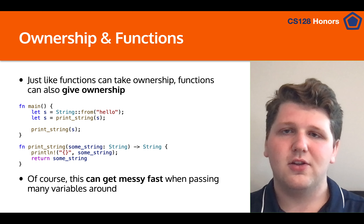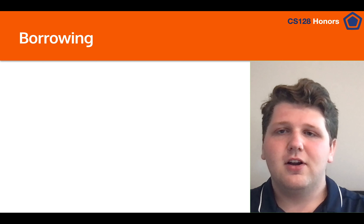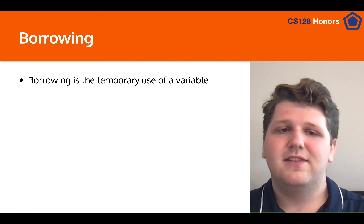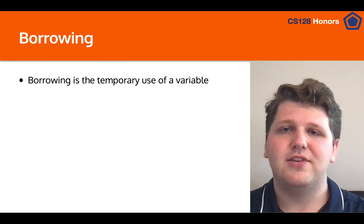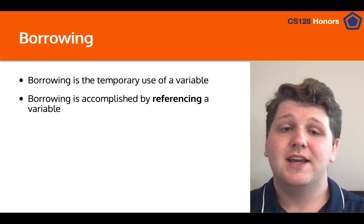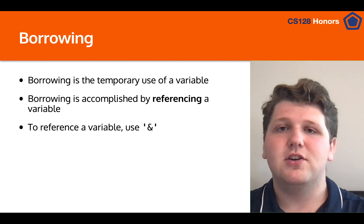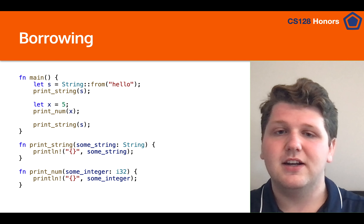There is another way that's going to be even better than this — if we had to do this every time, nobody would be writing Rust code. So let's talk about borrowing. Borrowing is the idea that you can temporarily use a variable in Rust without taking ownership of it. Borrowing is accomplished by referencing that variable, and to reference all you have to do is use the ampersand.